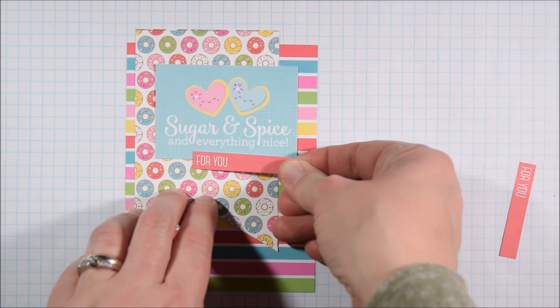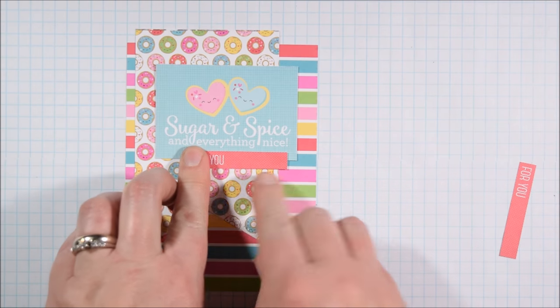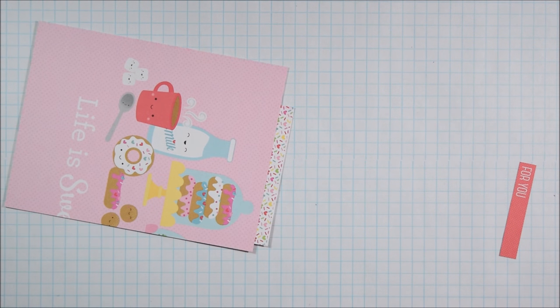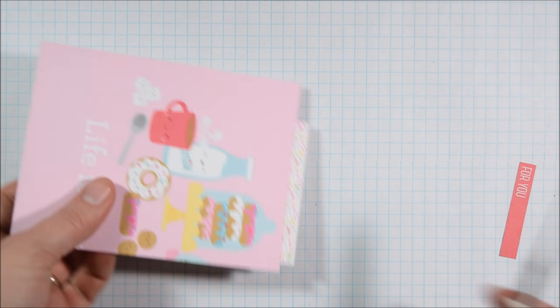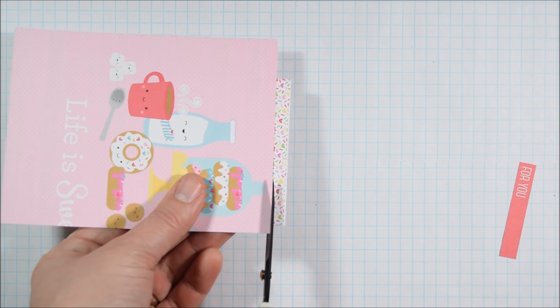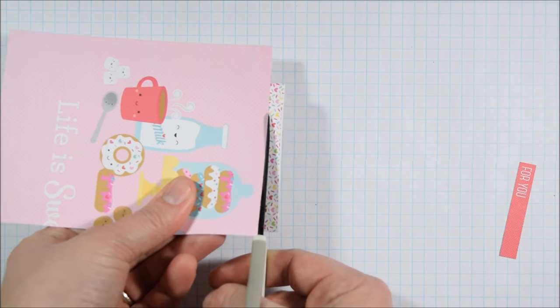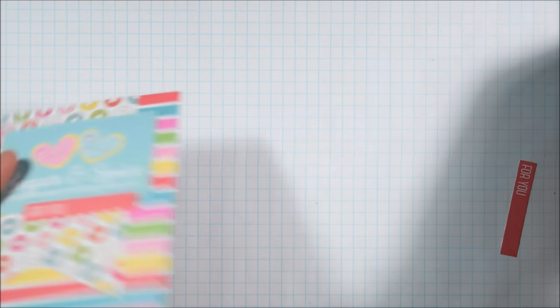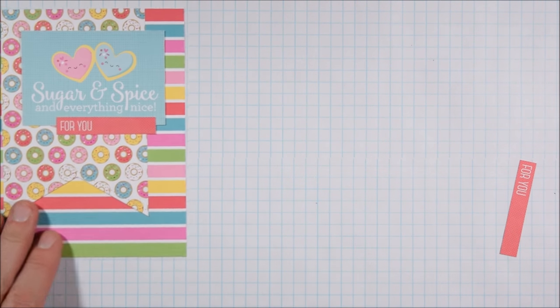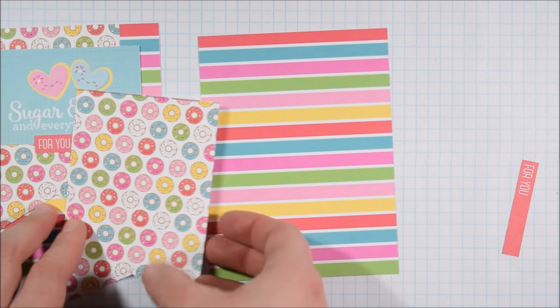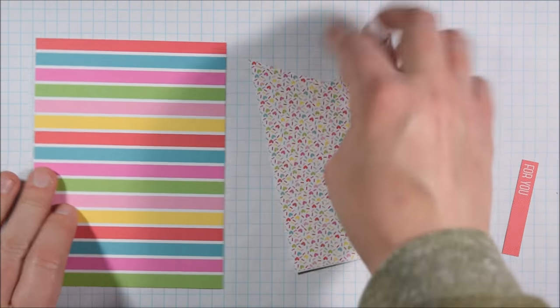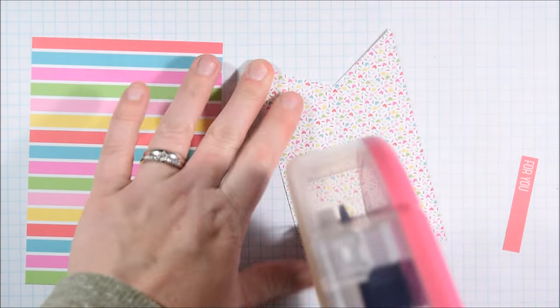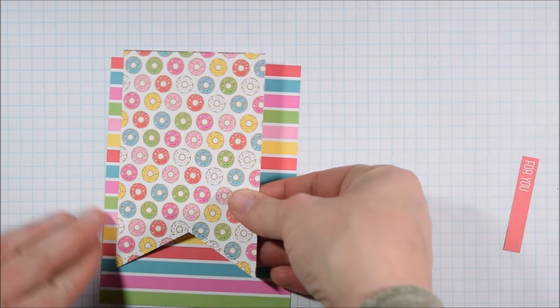There's this little block here that says sugar and spice and everything nice and that's not really a card sentiment. So I tried to think of a way I could make it into a sentiment. So I added this for you strip. So if you're looking at some of these little card cutaway pieces and thinking that doesn't really make sense, think about how you can pair some of the other things that are going on in the paper pad with it.